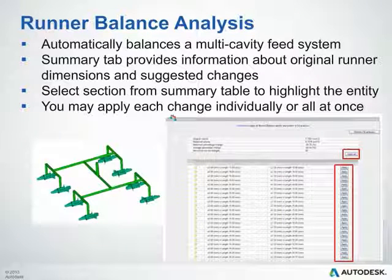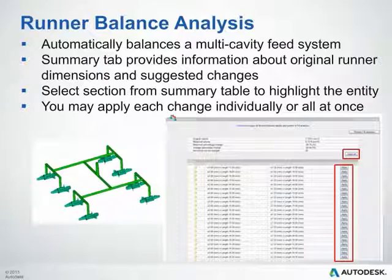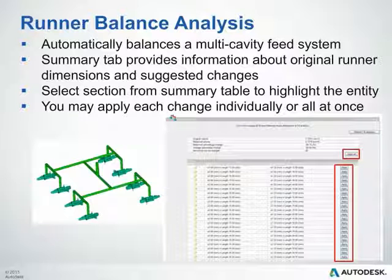Once the runner balance analysis completes, the Summary tab will pop up along the bottom of your user interface, looking much like the runner advisor analysis results. This Summary tab provides information about the original runner dimensions as well as the suggested changes. From here, you can select a section from the Summary table to highlight the entity, just like with the runner advisor, and you can apply changes individually or all at once by clicking the button to the right of the table.